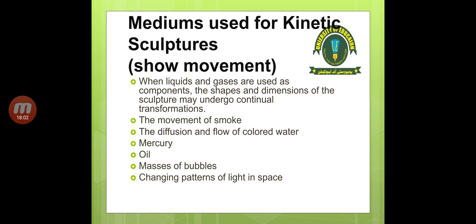Various mediums are used for kinetic sculptures to show movement. When liquids and gases are used as components, the shapes and dimensions of the sculpture may undergo continual transformation. These mediums include the movement of smoke, the diffusion and flow of colored water, mercury, oil, masses of bubbles, and changing patterns of light in space.